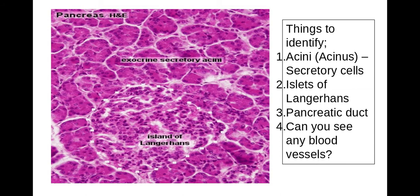Here we have an example of the exocrine acinae, and here we have an example of the islets of Langerhans. In this particular image I can't see a duct, but as I showed you in the earlier image you can quite clearly see that. These are the things you need to be able to identify from an image, and these are all features I have seen come up in an exam before.